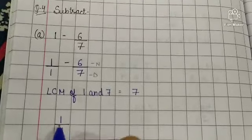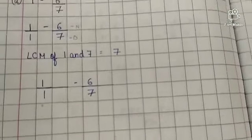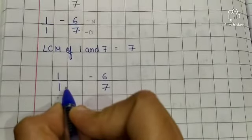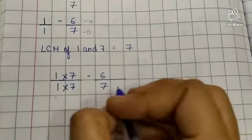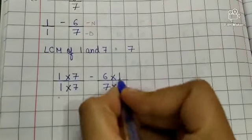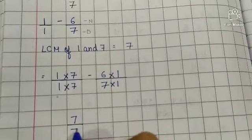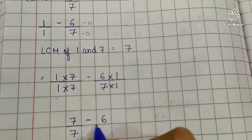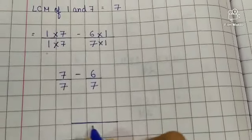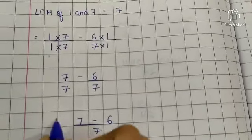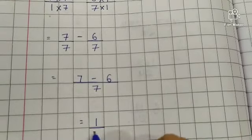Now 1 upon 1 minus 6 upon 7. To make the denominator 7 — 1 times 7 is 7, so multiply denominator by 7, and numerator also by 7. And for 7, multiply by 1. So 1 sevens are 7 upon 1 sevens are 7, minus 6 ones are 6 upon 7 ones are 7. Now denominators are same, so we will subtract the numerator: 7 minus 6.